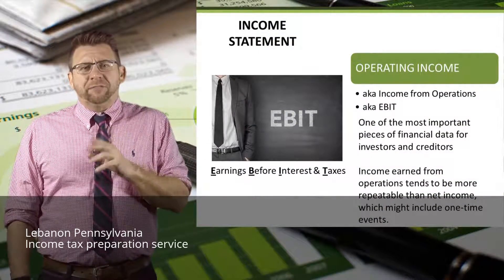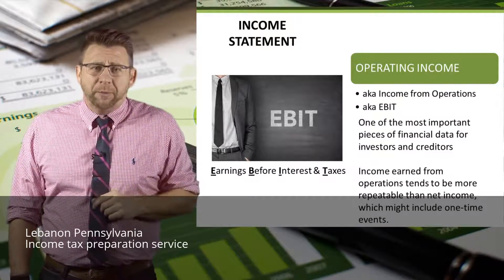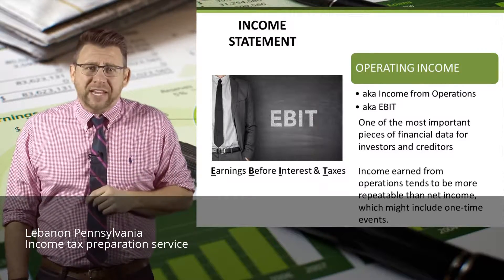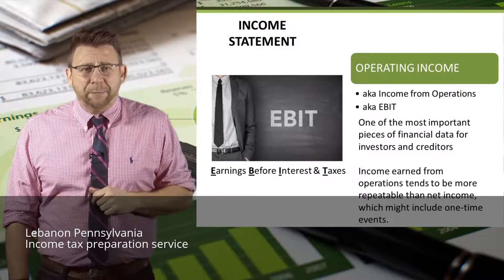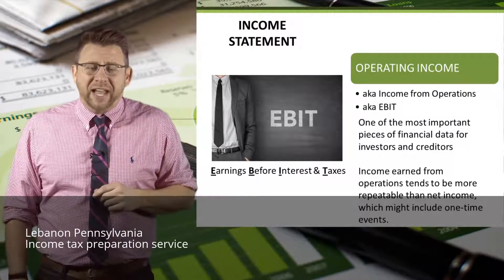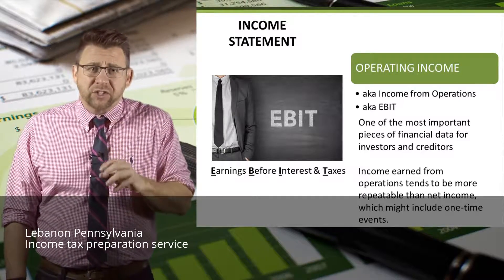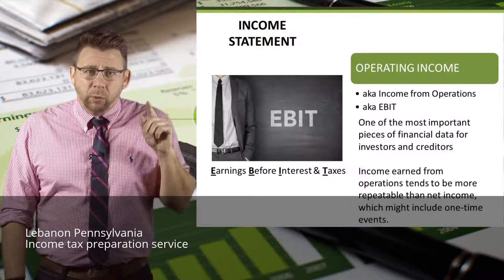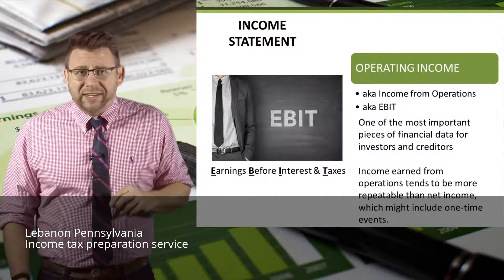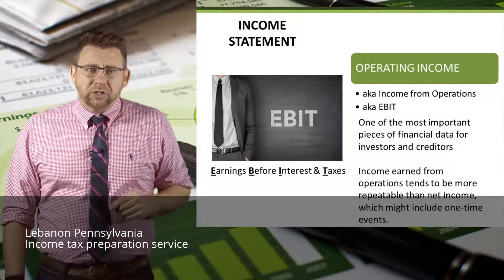Operating income has a few different names. It is also known as income from operations or EBIT, which stands for earnings before interest and taxes. When we look back at the multi-step income statement, about the only things that remain are interest and taxes. Operating income is one of the most important pieces of financial data for investors and creditors because it tends to be more repeatable than net income, which may include some one-time events — giving it a higher predictive value.